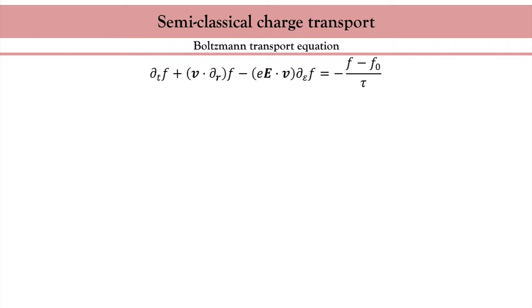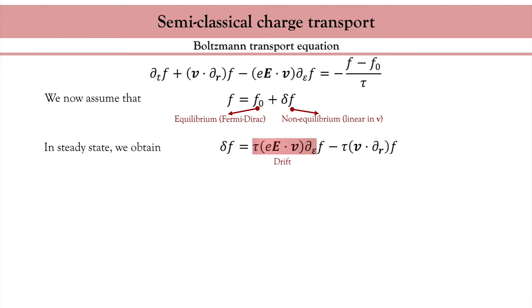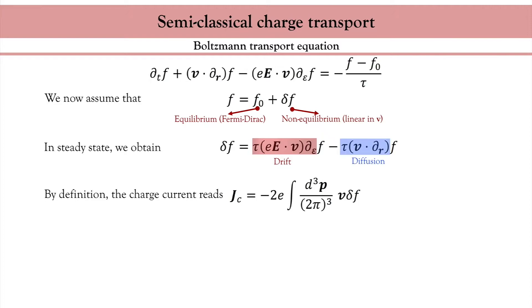Now let's solve this equation. What I'm interested in is the deviation of the electron cloud from equilibrium. I parse the distribution into an equilibrium part — which is the Fermi-Dirac distribution — and a non-equilibrium part, which is responsible for the transport properties. Using the Boltzmann equation and taking the derivative to zero, I directly obtain an expression for the non-equilibrium distribution. There are two terms: the first is driven by the electric field in agreement with Drude theory, called the drift term; the second is driven by the spatial gradient of the distribution itself, absent from Drude theory, called the diffusion term. To calculate the charge current, I compute the integral over momentum space of the product between the velocity and the non-equilibrium distribution.